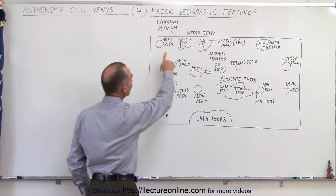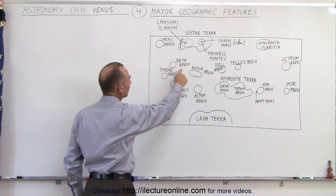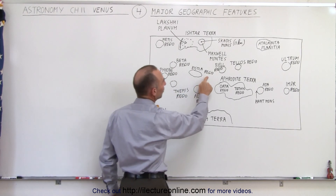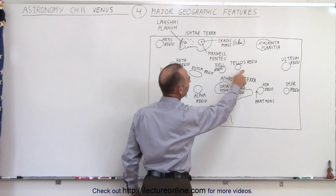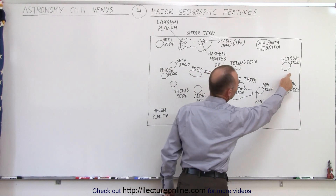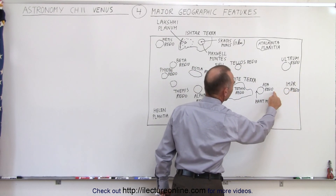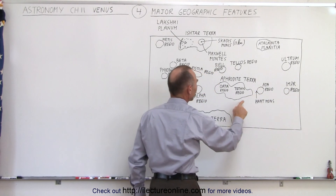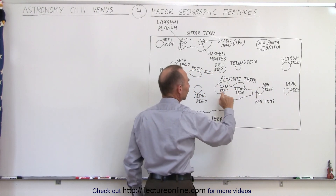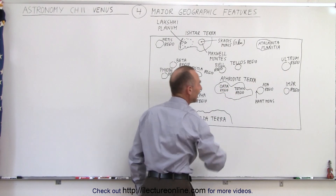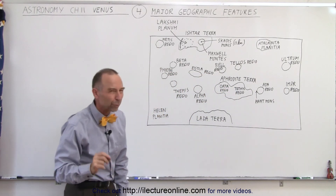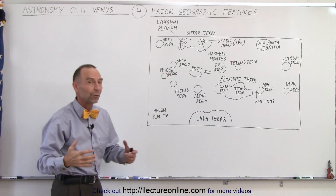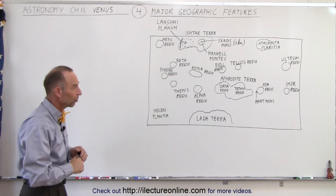Here we have Metis Regio, Beta Regio, Phoebe Regio, Themis, Alpha Regio, Estla Regio, Bell Regio, Telus Regio, Ultram Regio, Emperor Regio, Ada Regio, and there's a large mountain here we'll talk about later. Aphrodite Terra is also made up of Vallada Regio and Tethys Regio. You might recognize some of those names, especially Tethys and Phoebe, because those are names also used for moons in our solar system.